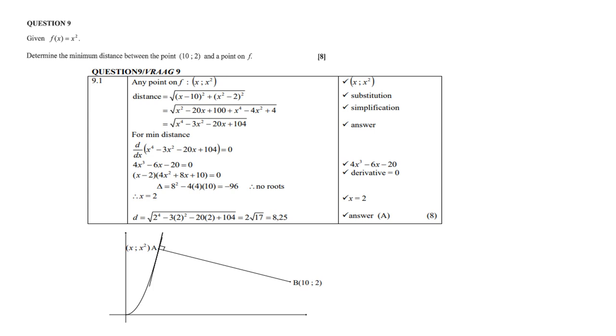Then we use the distance formula which you've learned in analytical geometry. So it is x minus 10 and of course x squared minus 2.